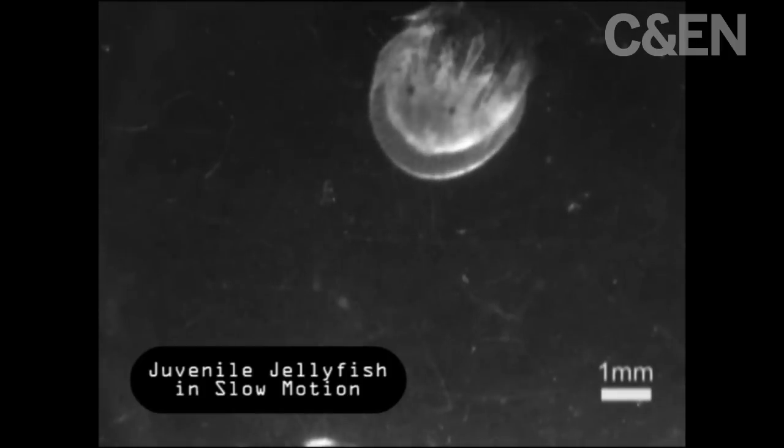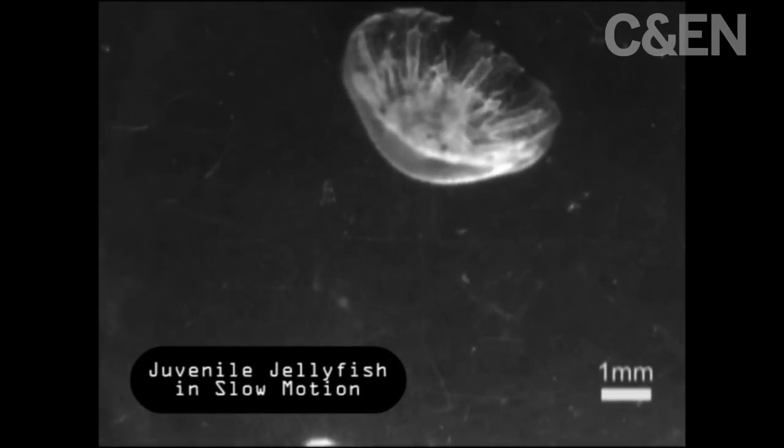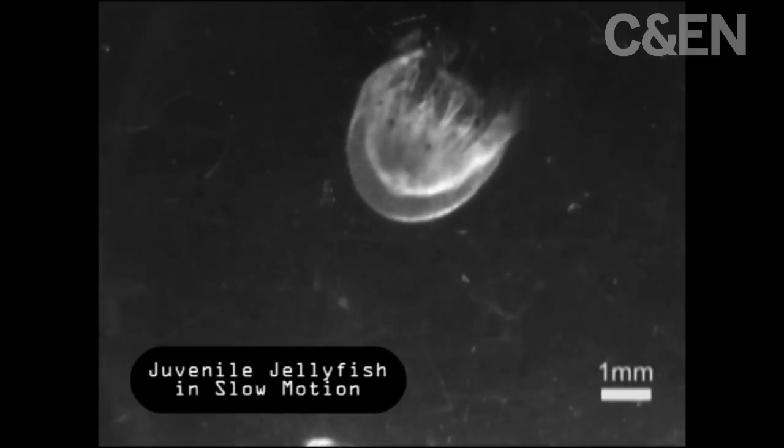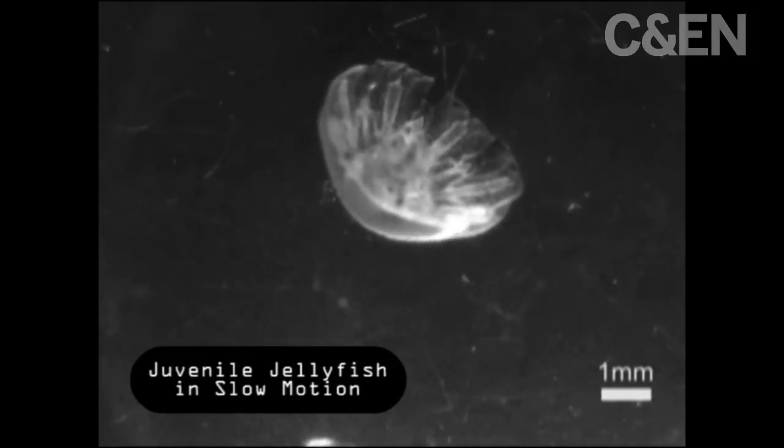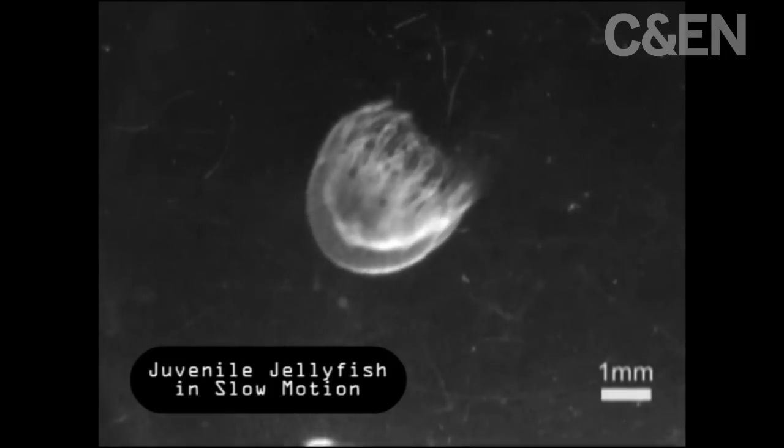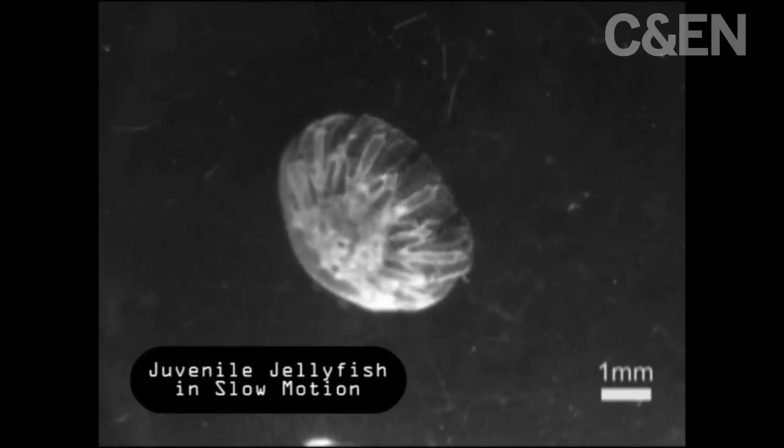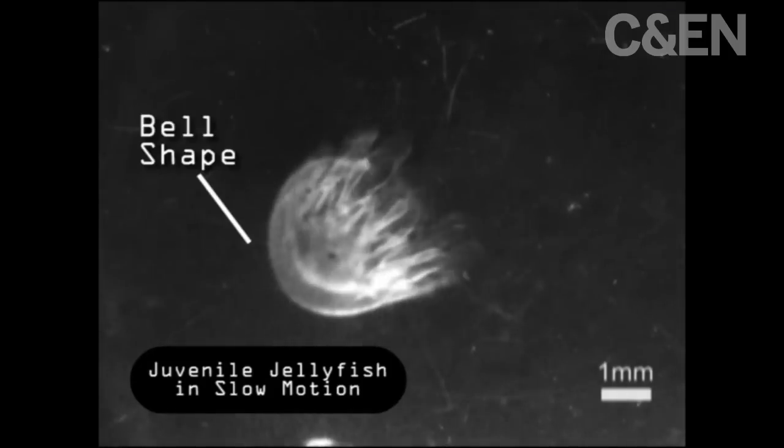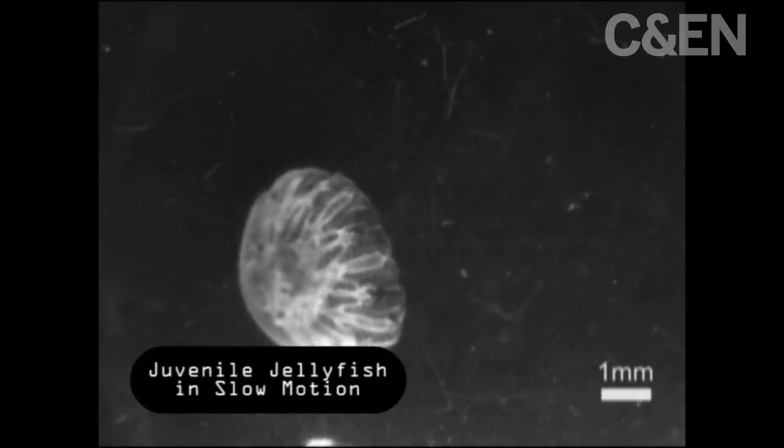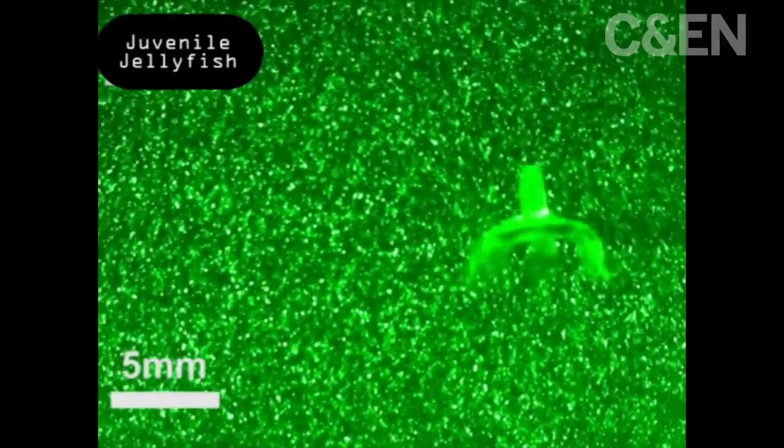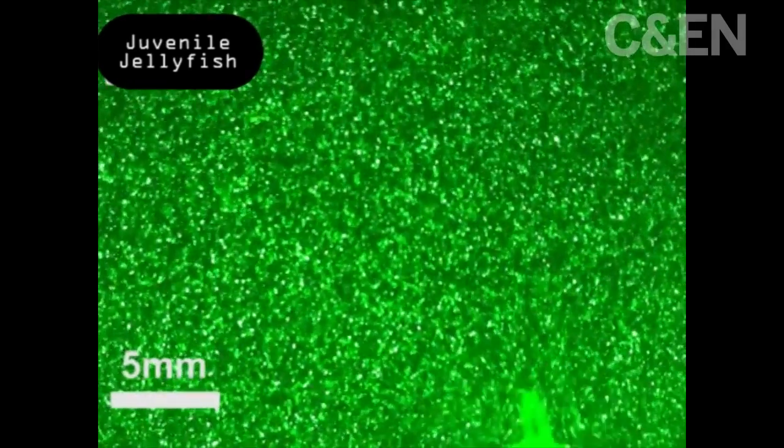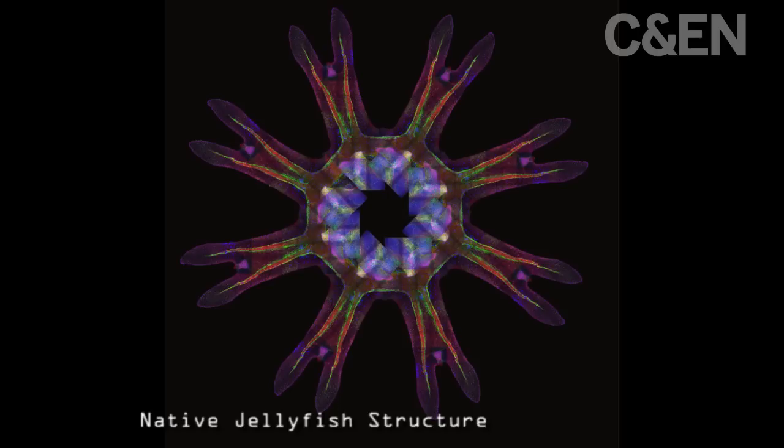We're interested in the jellyfish as a model system because it has a very simple set of functions or behaviors. That is, it contracts and relaxes its bell and by this propels itself and feeds itself. It doesn't have a lot of other functions, so it's relatively straightforward to relate its structure to those functions.